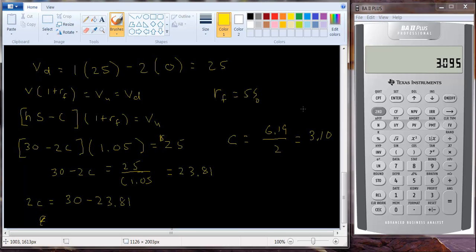And we could check our results by seeing that if we punch this in, if we put in $30 and we put $3.10 here, raised it to the risk free rate times 1.05, we should get $25.